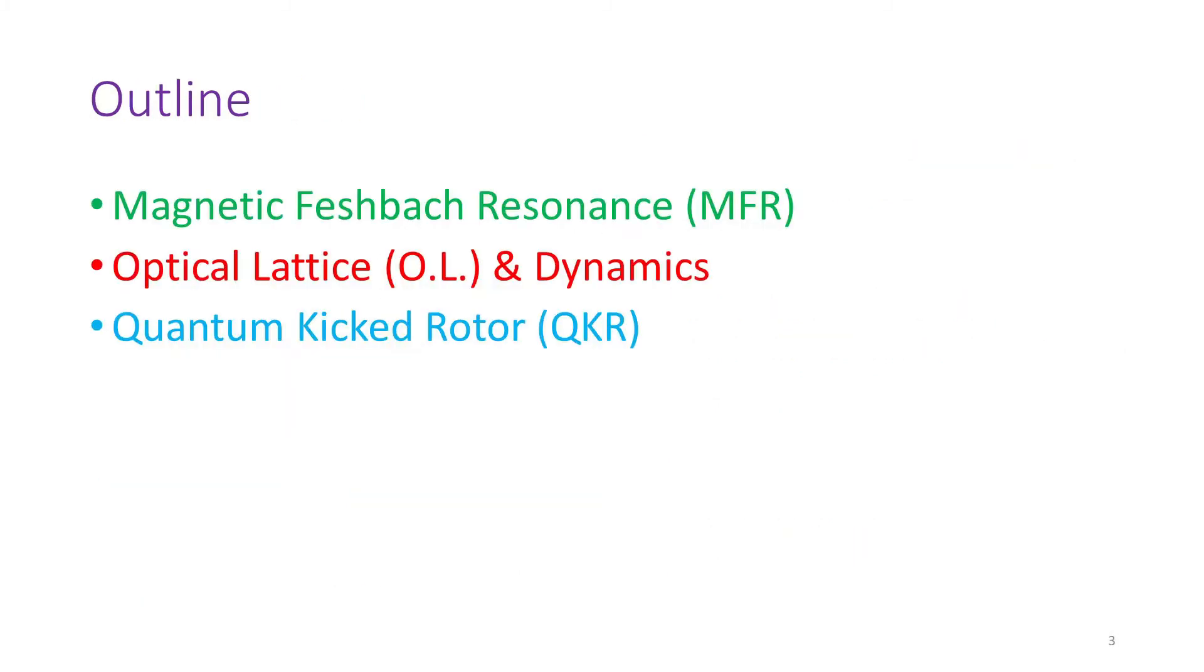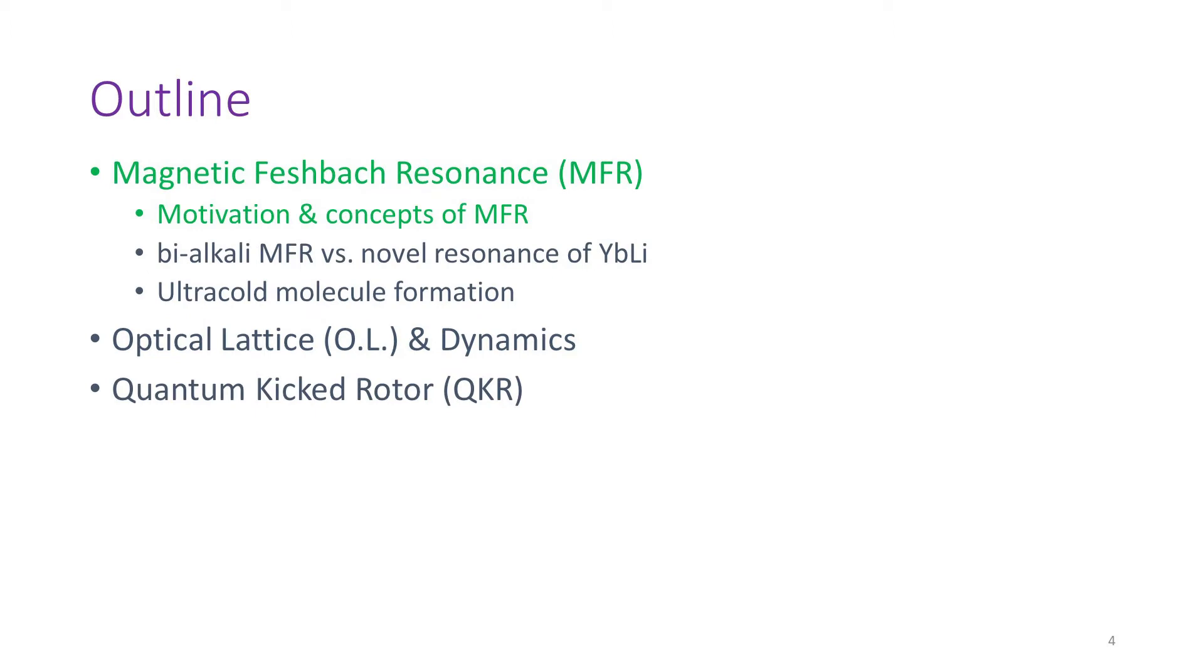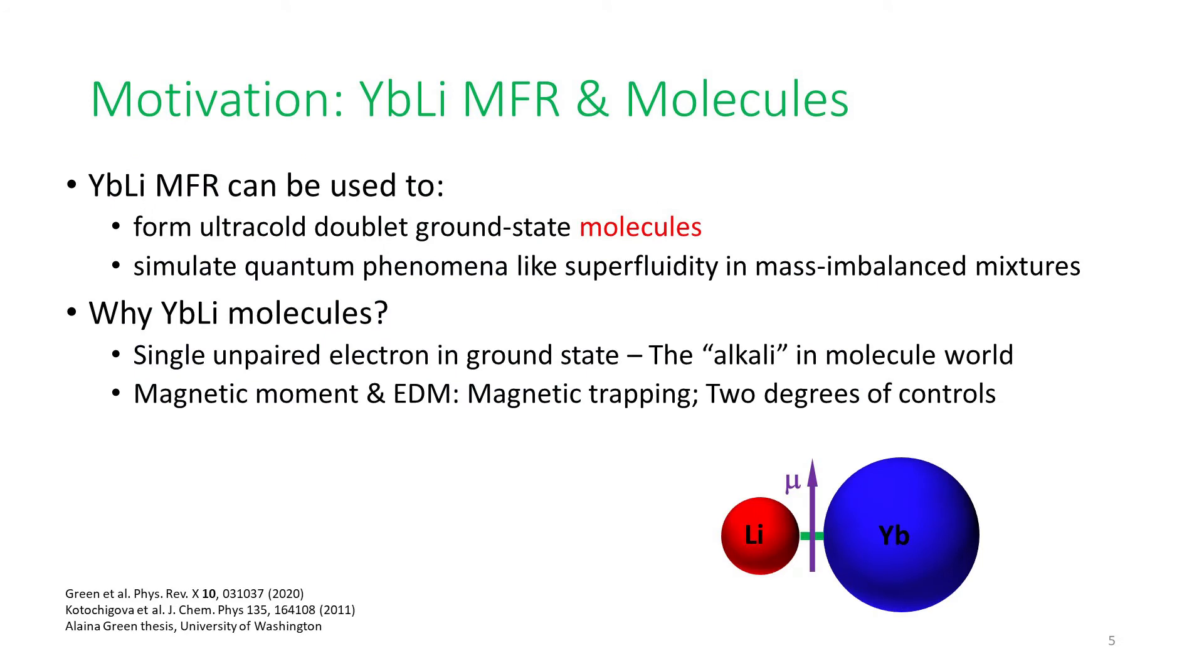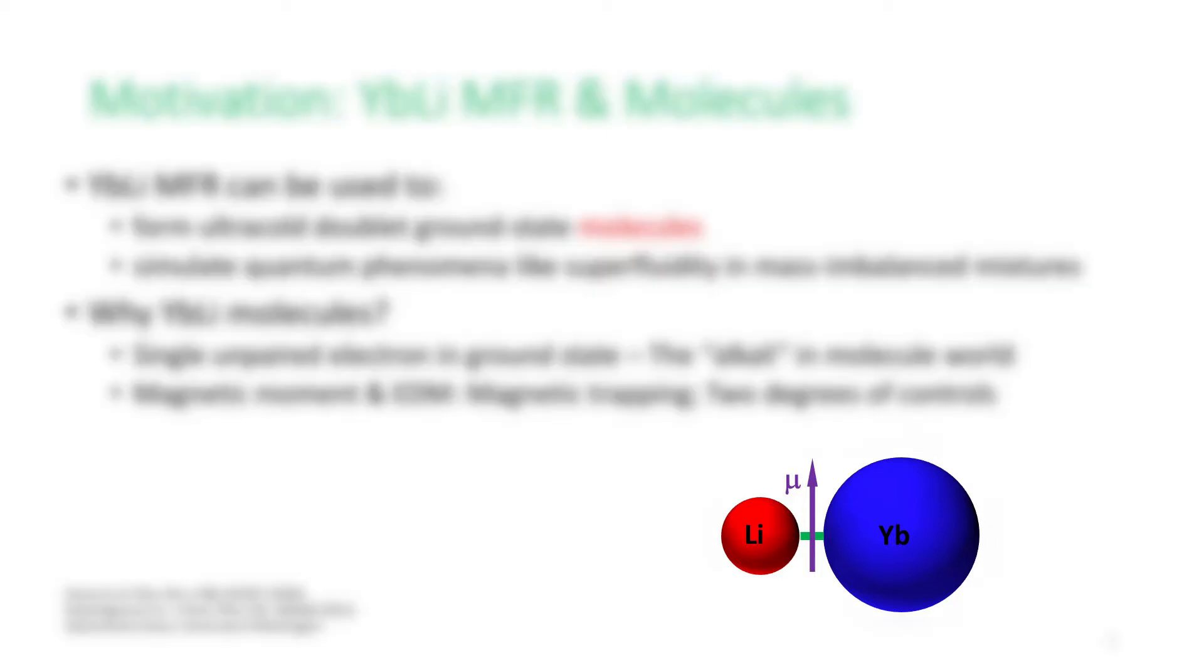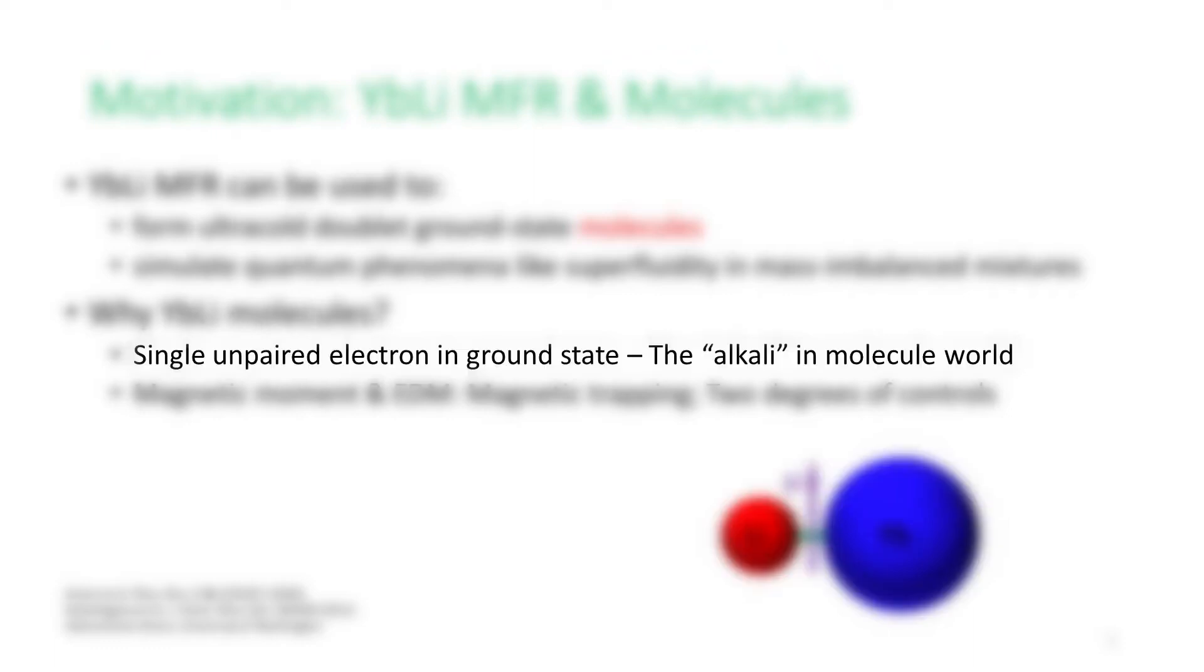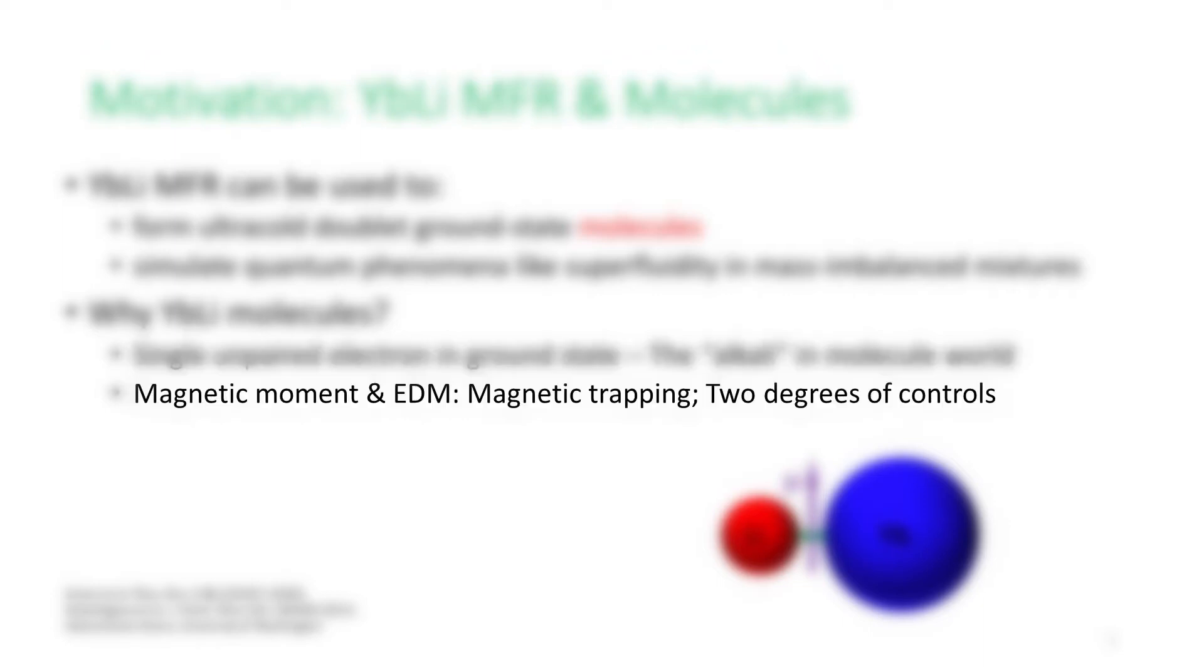My presentation in this series of two videos includes three sections, as shown in the outline here. The first section is about the magnetic Feshbach resonance. I'll start with the motivation and basic concepts of MFR. The magnetic Feshbach resonance between ytterbium and lithium can be used to form ultracold doublet ground state molecules, or to simulate quantum phenomena like superfluidity in mass-imbalanced mixtures. Why are we interested in ytterbium-lithium molecules? As you can see from the sketch on the bottom right, the ytterbium atom in this molecule, having a closed-shell electronic structure, has no unpaired electron. But the lithium atom in the molecule contributes one unpaired electron, resulting in a molecule with a single unpaired electron in its ground state, which makes it the equivalent of an alkali atom in the molecule world.